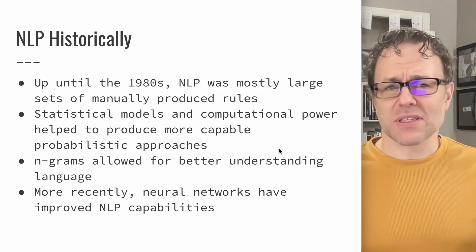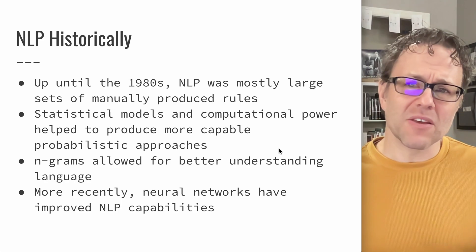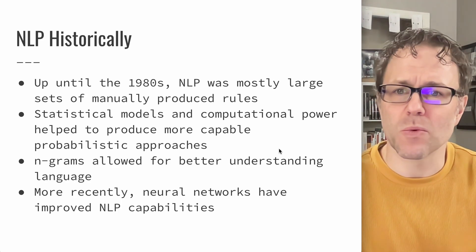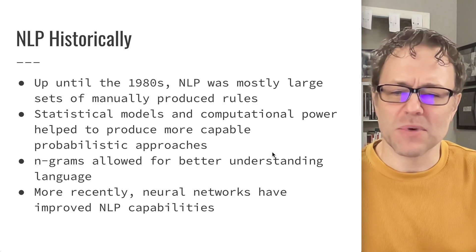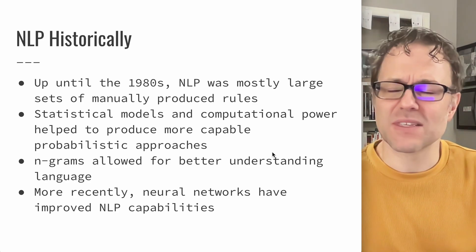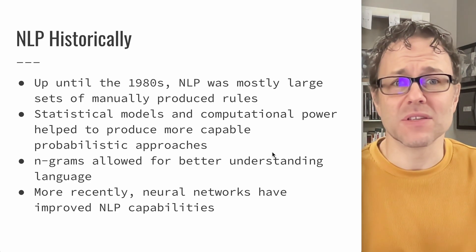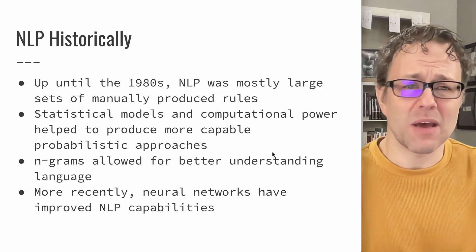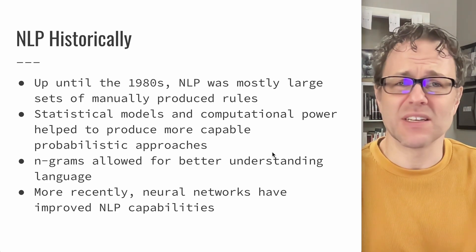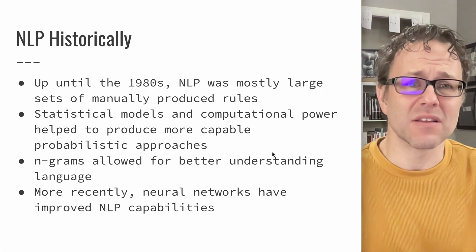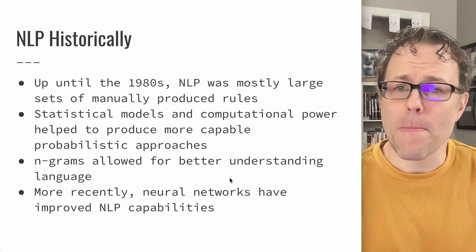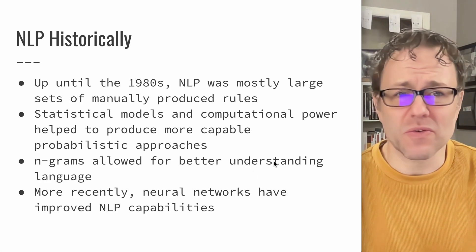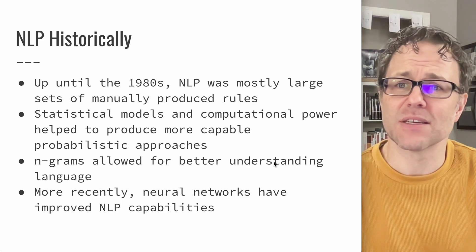If you look at something like the entirety of the internet, you can get very good at predicting how human language works. An n-gram is a sequence of n words used to predict context or the words in that sequence. And more recently, neural networks have further improved what we can do with natural language processing.